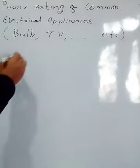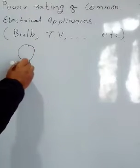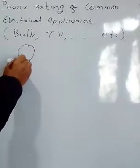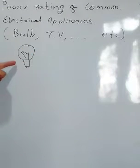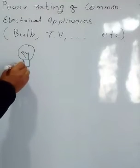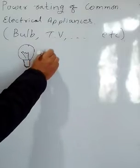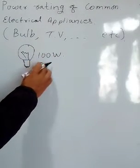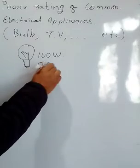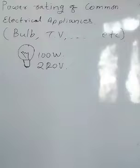For example, if you have an electrical bulb, you will see its features. If there is written 100 watts and 220 volts on this electrical bulb, what is the meaning of this?